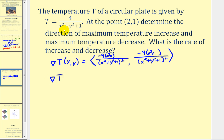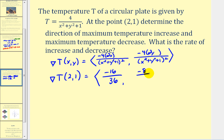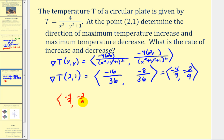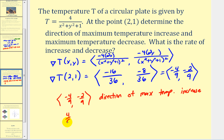Evaluating at the point two, one: for the x component, the numerator is negative 16, and the denominator is four plus one plus one equals six, squared is 36 — giving negative 16 over 36. For the y component, we get negative four times two times one equals negative eight over 36. These simplify to negative four ninths and negative two ninths. So the vector negative four ninths, negative two ninths gives the direction of maximum temperature increase, and its opposite — four ninths, two ninths — gives the direction of maximum temperature decrease.